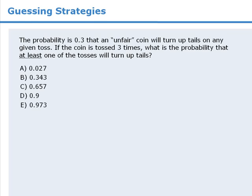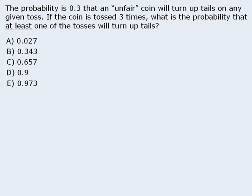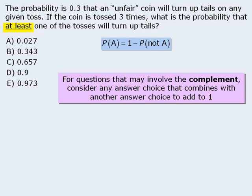Alright, now let's return to the original question. In this question, we have at least, so the solution might involve the complement. Since the solution might involve the complement, we should consider pairs of answer choices that add to one as potentially correct. So these two answer choices add to one, so we'll leave them alone, and these two answer choices add to one. Since answer choice D does not pair with another answer choice to add to one, we'll eliminate it. From here, when we combine this strategy with some intuition, we see that we can reduce our guessing options down to just two or three answer choices.